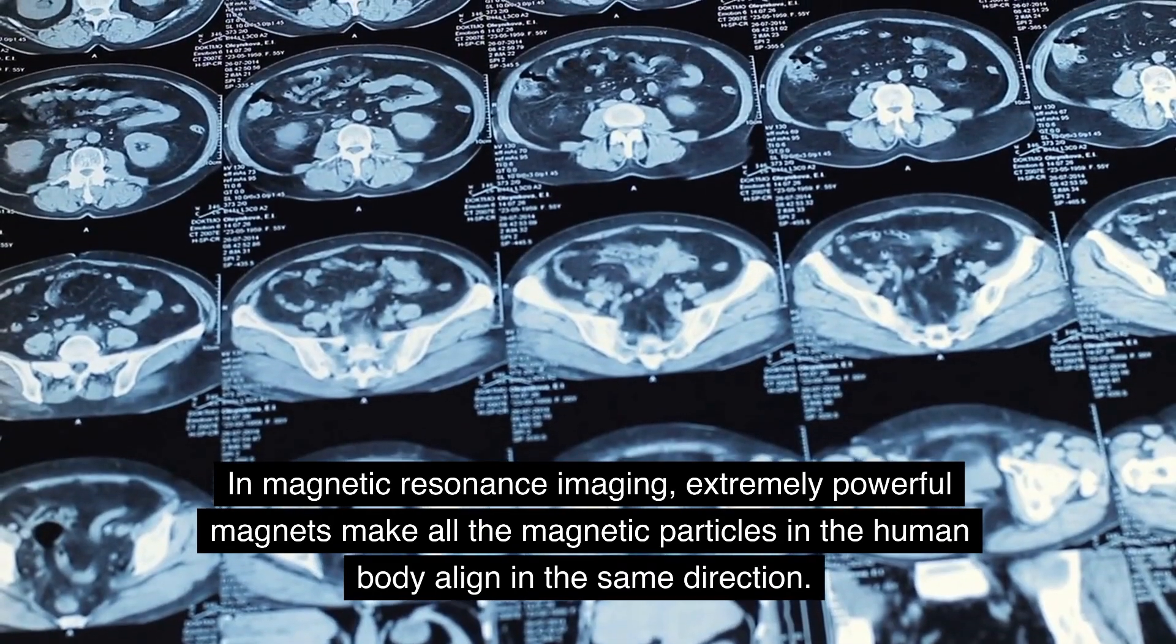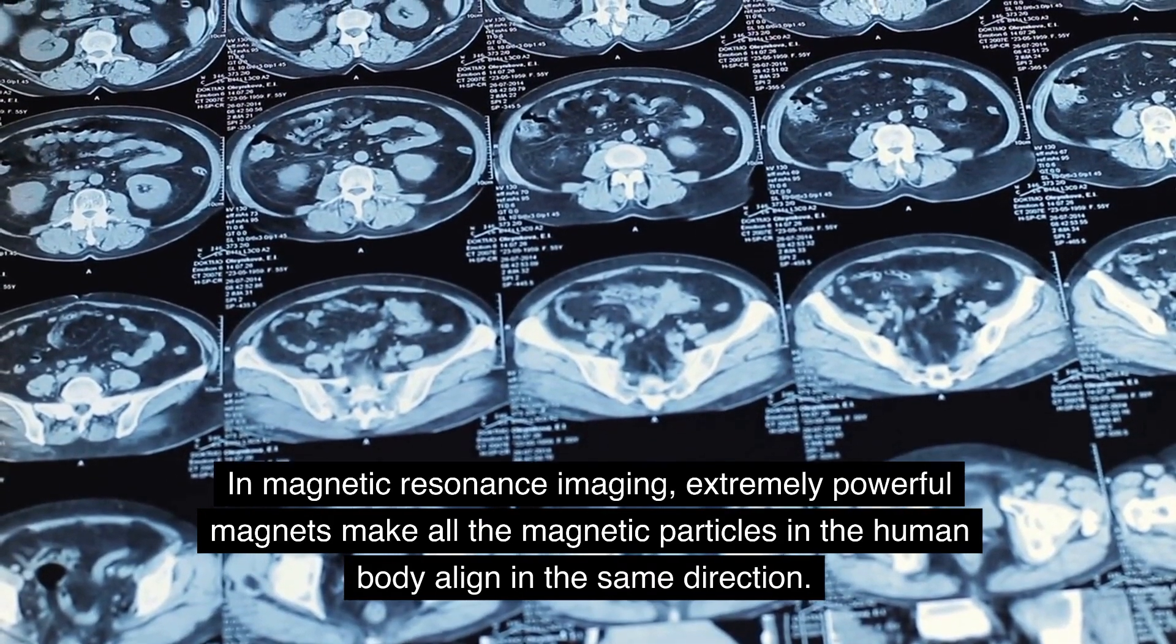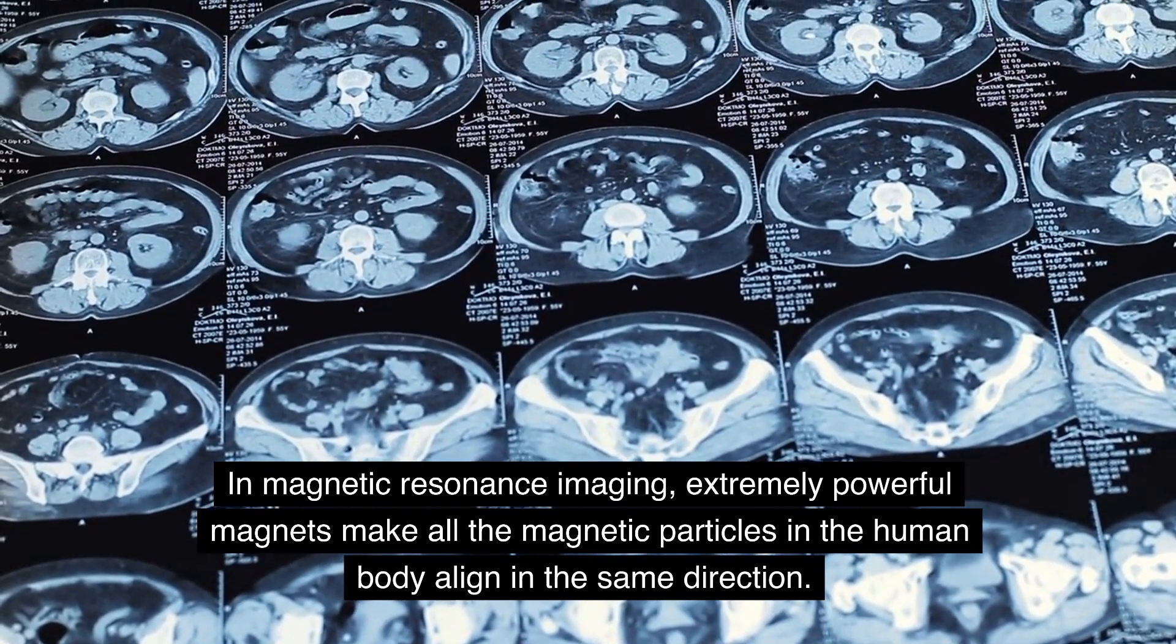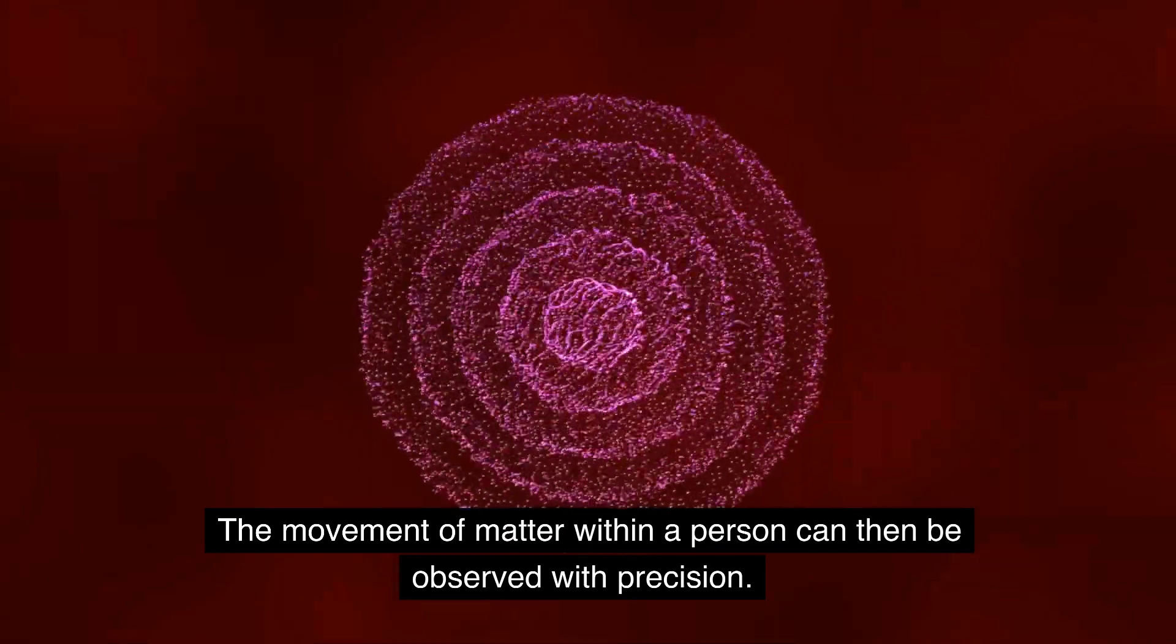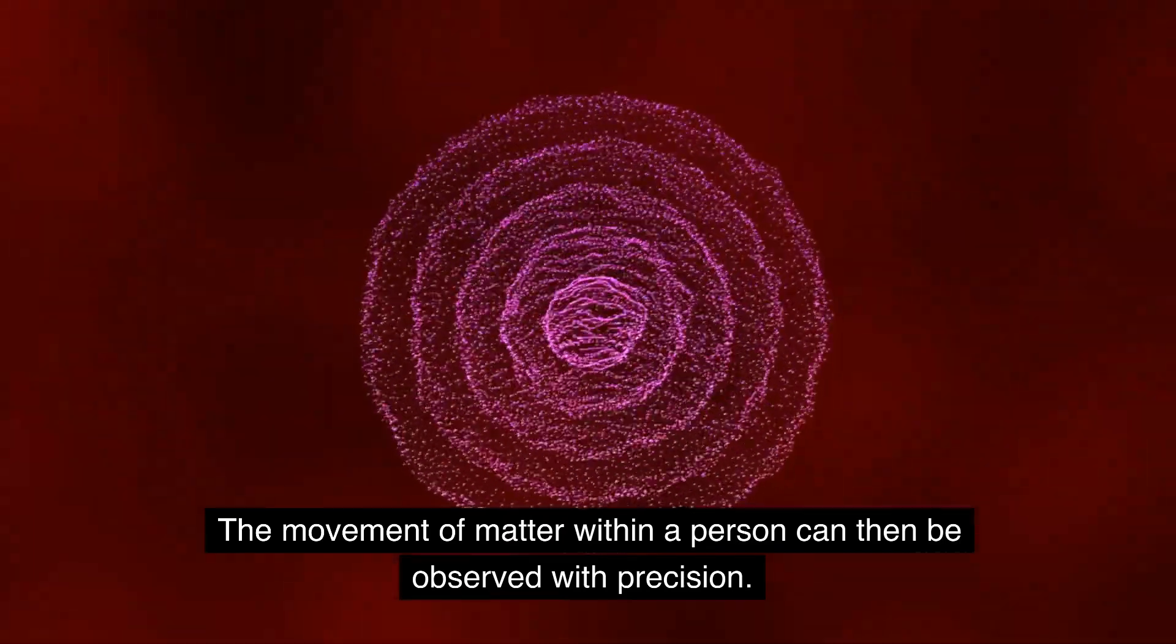In magnetic resonance imaging, extremely powerful magnets make all the magnetic particles in the human body align in the same direction. The movement of matter within a person can then be observed with precision.